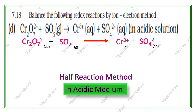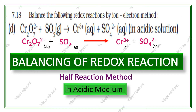Hello friends, welcome back to Rajavali education channel. Here we are going to see how to balance the redox reaction by ion electron method. The question is taken from 11th chemistry NCERT, chapter redox reactions, question number 18, subdivision D. That is dichromate ion plus SO₂ gas gives chromium 3 plus and sulfate ions. Now we see how to balance this redox reaction.